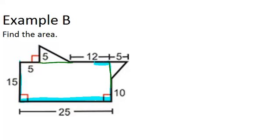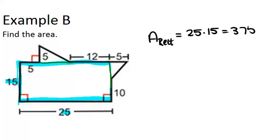So in this rectangle, the base is given as 25 and the height is given as 15. So the area of the rectangle equals 25 times 15, which is 375 units squared.